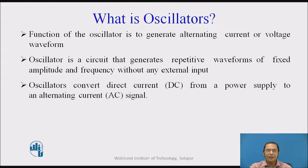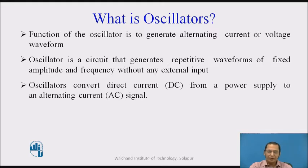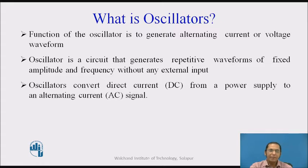What is an oscillator? The function of the oscillator is to generate alternating current or alternating voltage waveforms. One can define an oscillator as a circuit that generates repetitive waveforms of fixed amplitude and fixed frequency without any external input. The oscillator circuit keeps generating a repetitive waveform whose frequency and amplitude are already pre-decided.